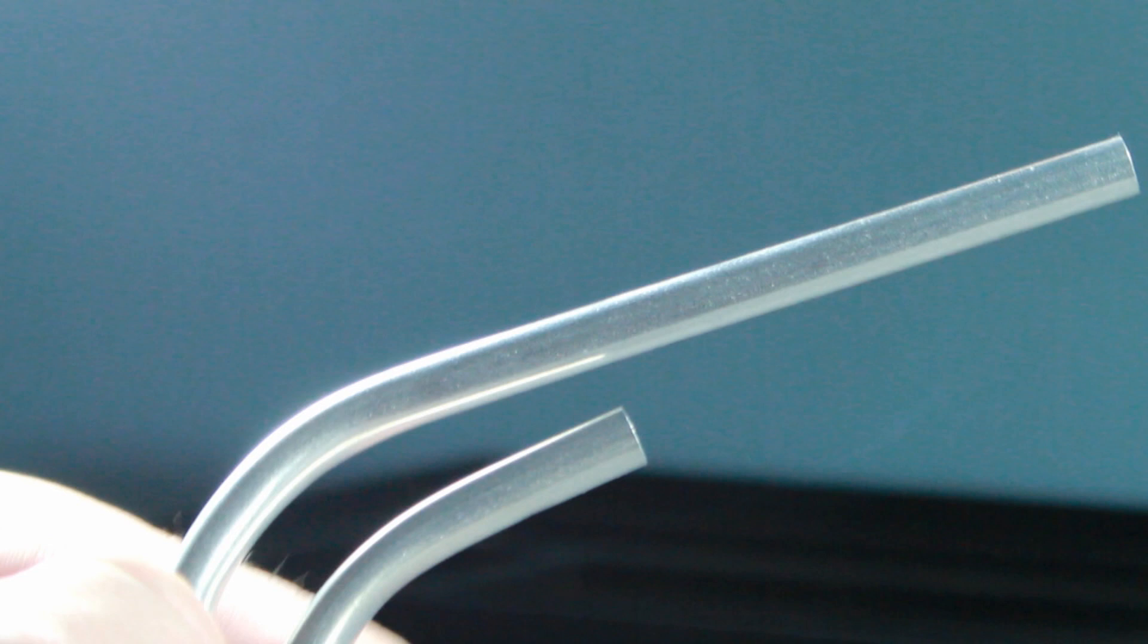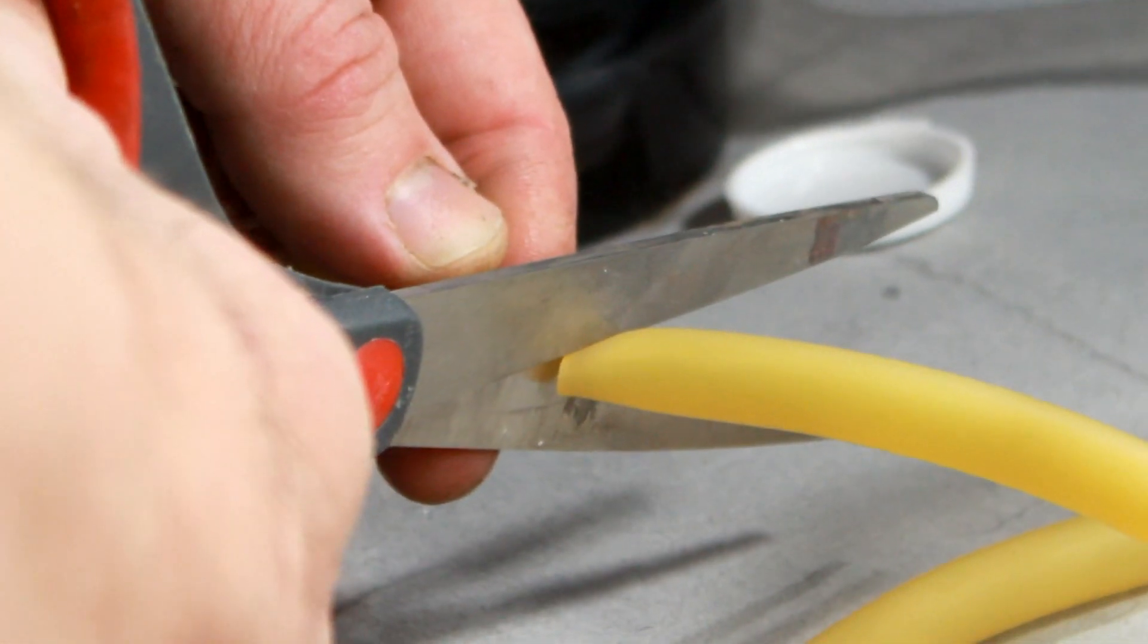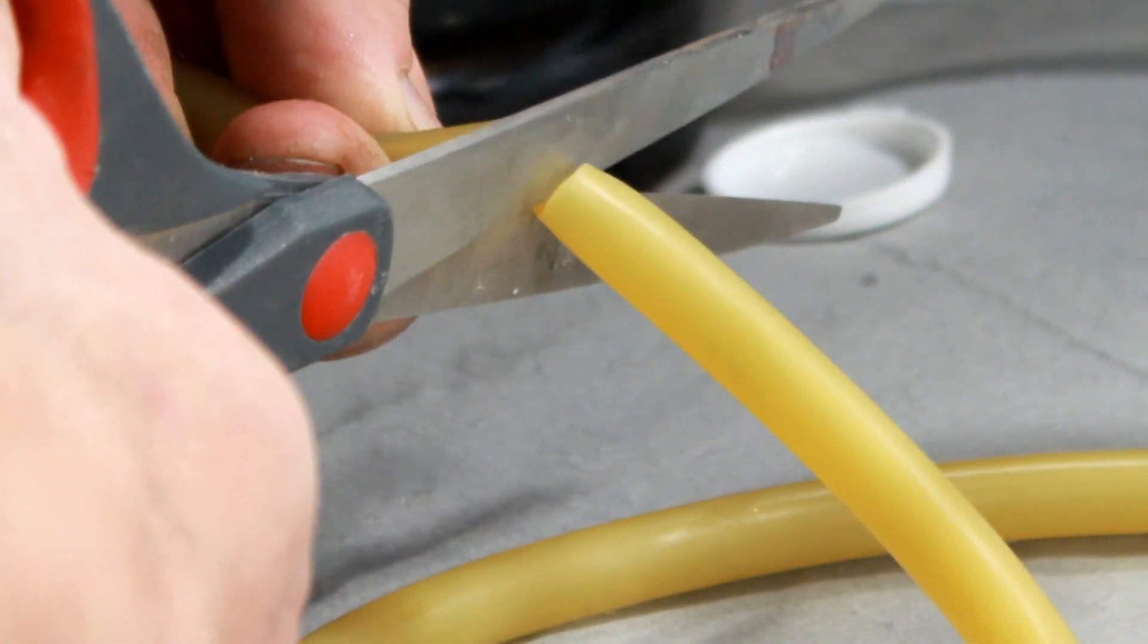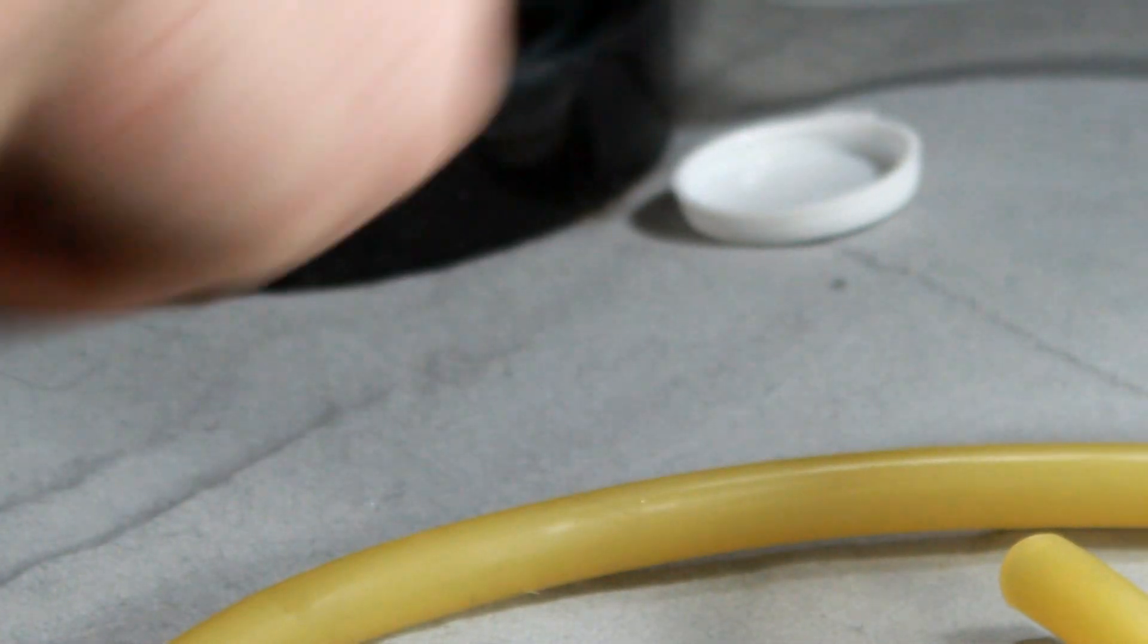The short stem is connected to the shorter length of tubing and the long stem is connected to the longer length of tubing, which you're going to be using to collect your ants with. You have to cut the tube that comes with your package.